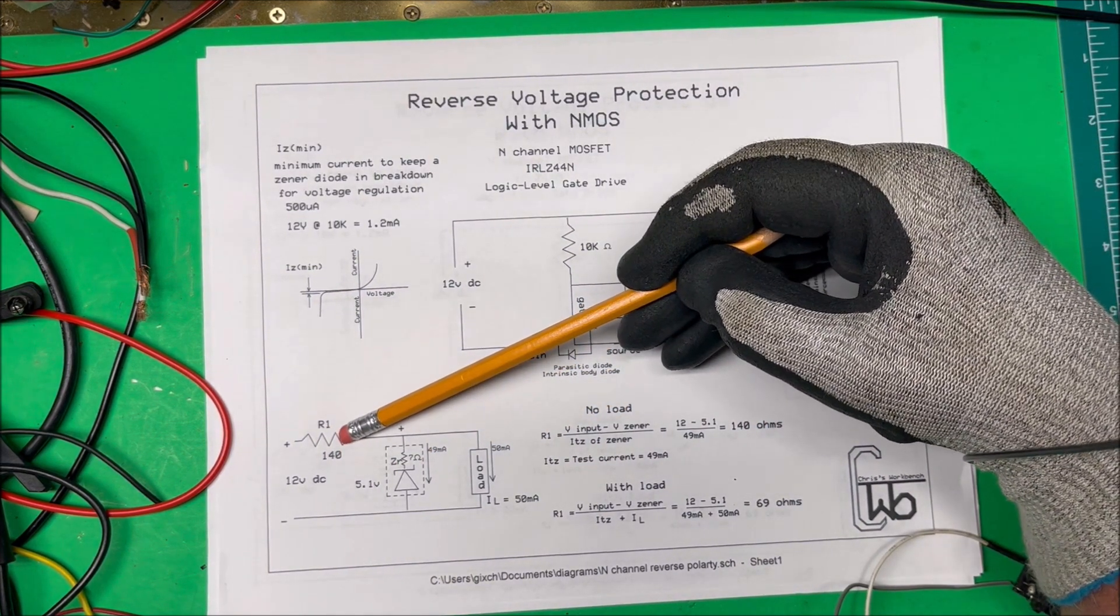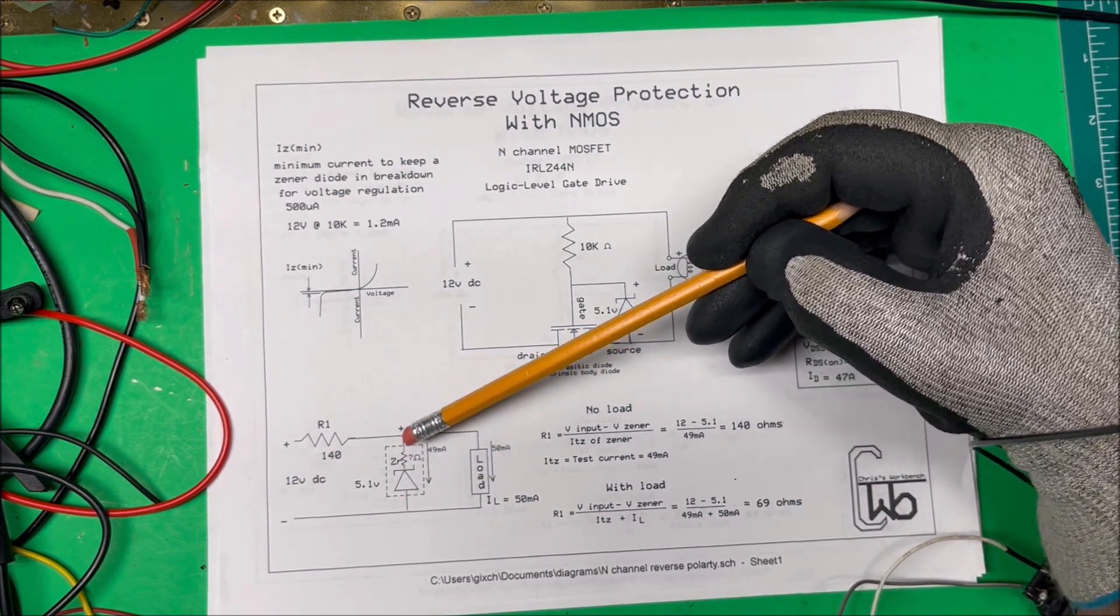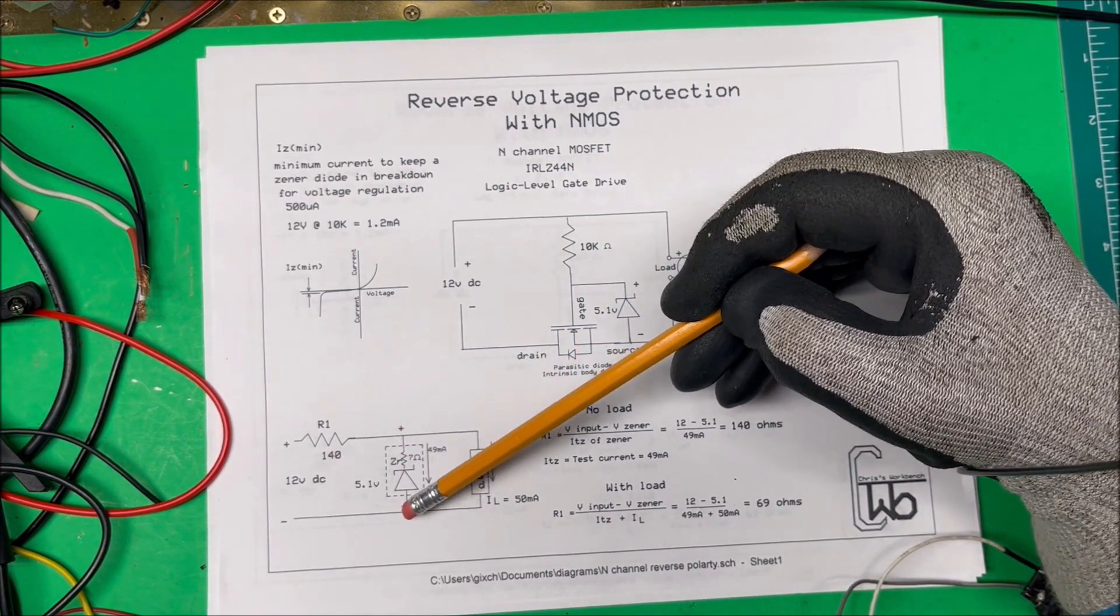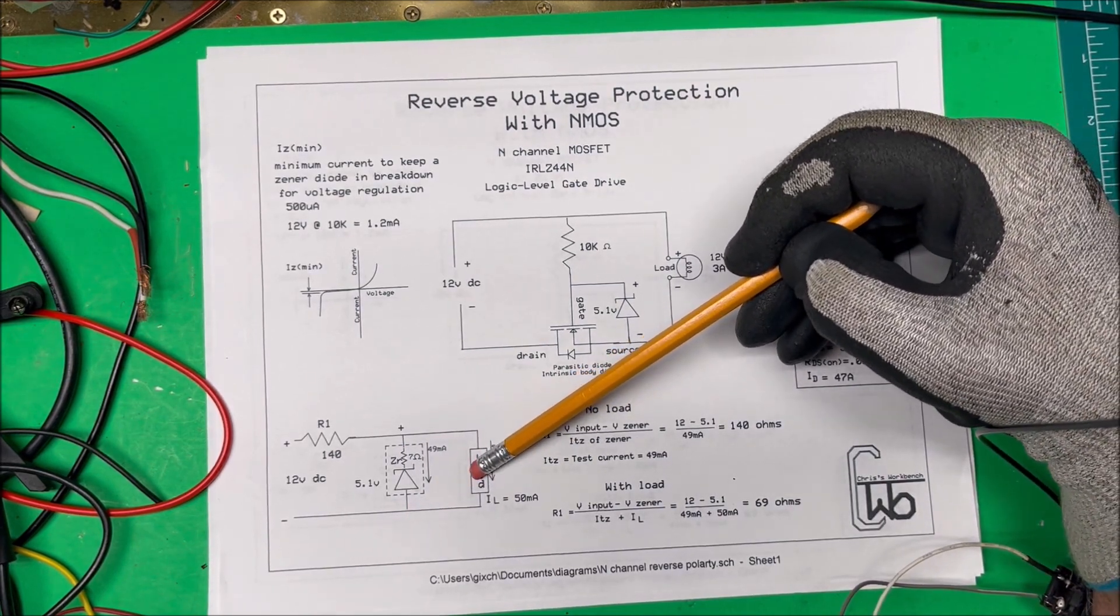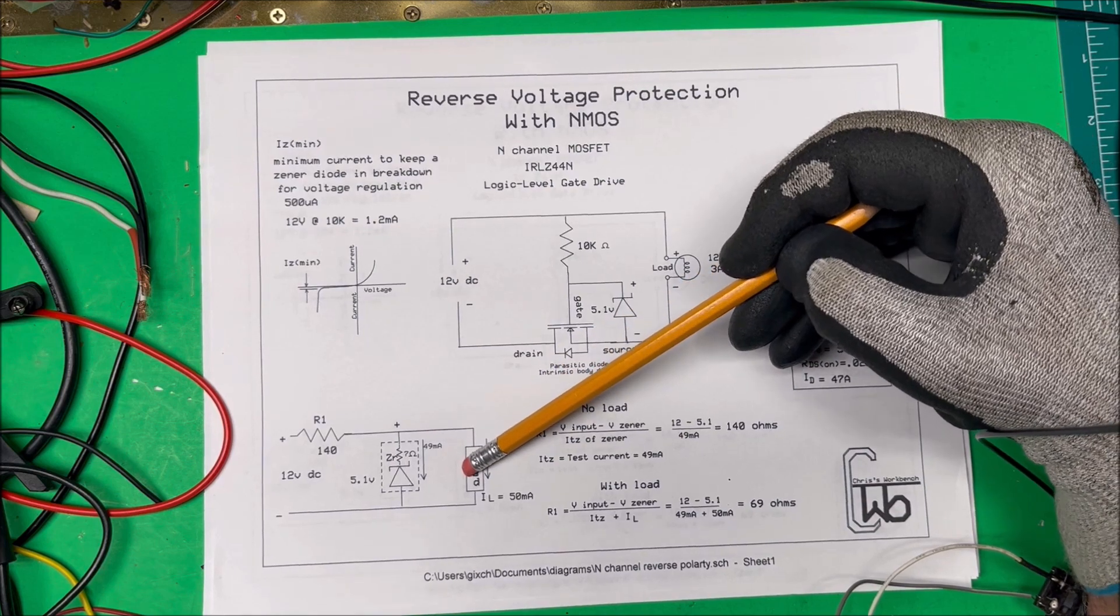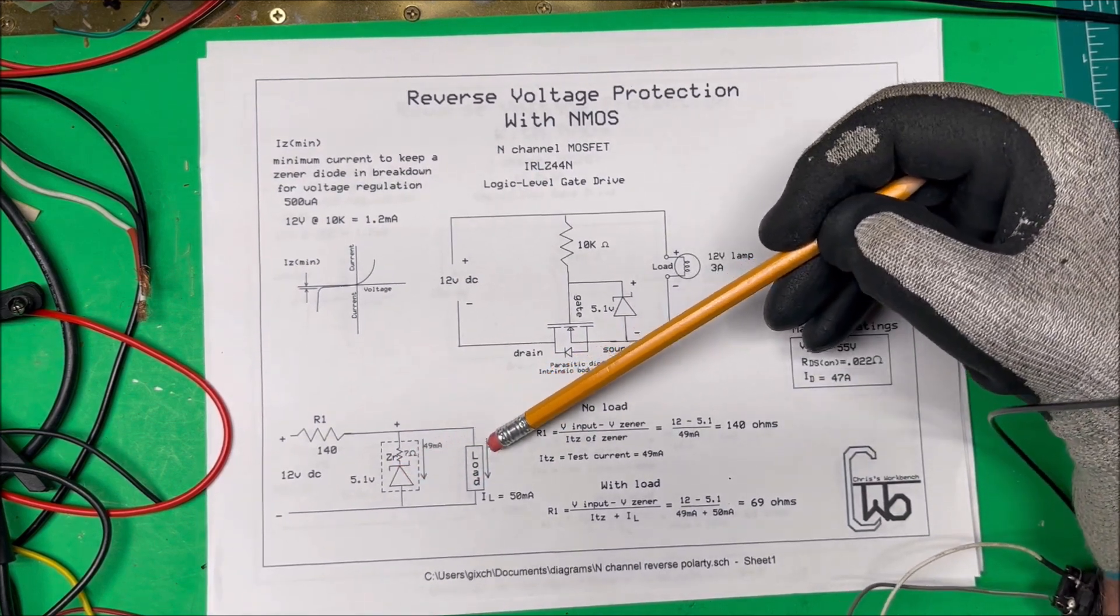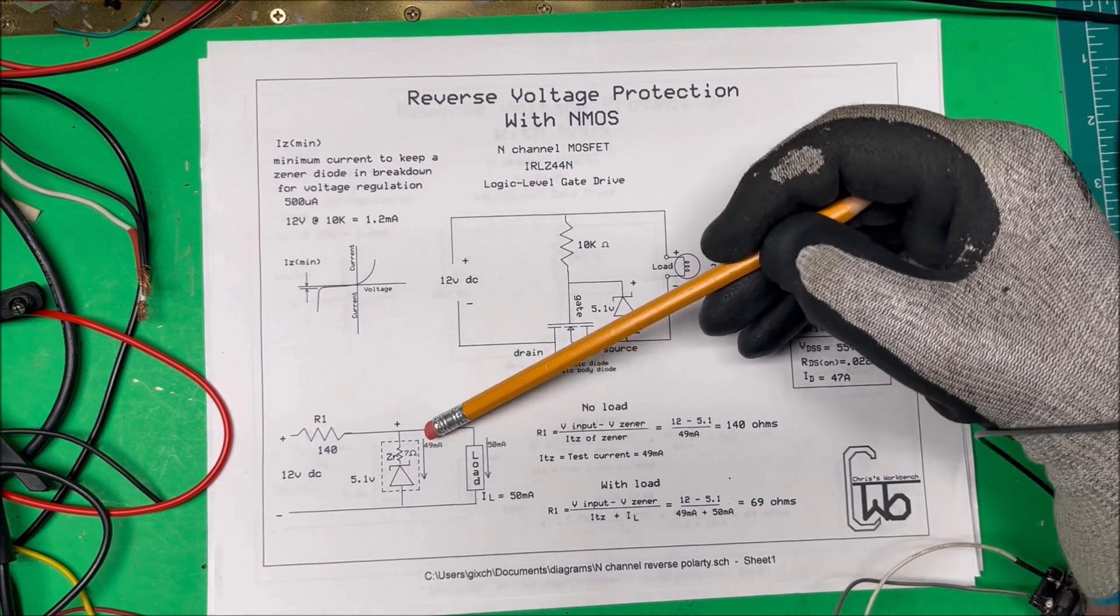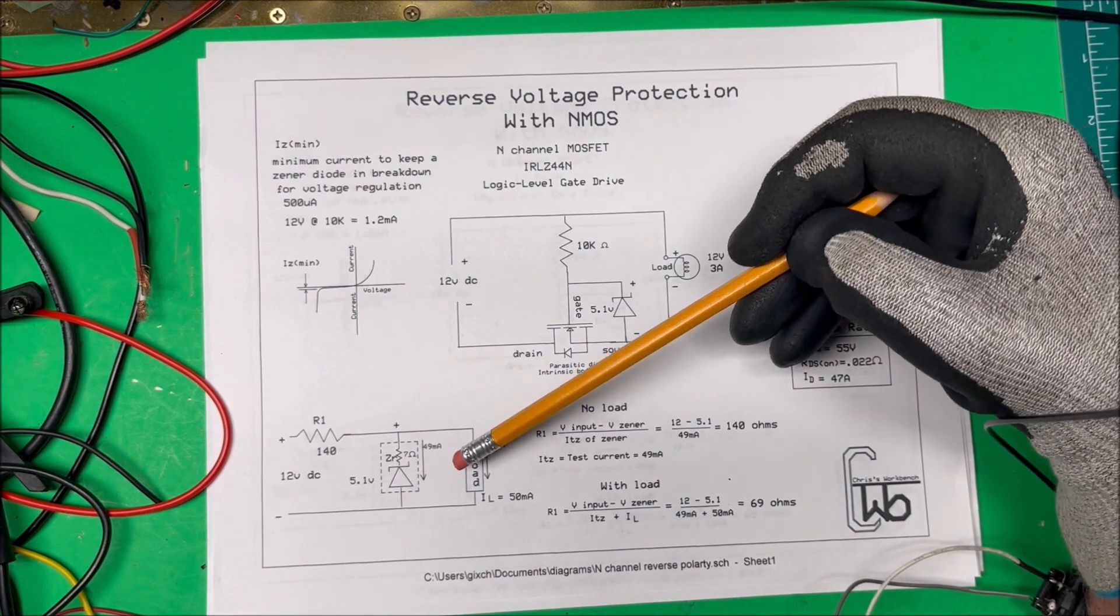So if we put 140 ohms in here we're going to get 49 milliamps through here. It's our test current, the Zener is going to be happy with that. Now we can increase the load over here, we can put you know 40 milliamps through here, we could probably put up to say 48 milliamps and it's still going to regulate. If we go over 50 milliamps now we're not going to have enough current left going through the diode to regulate anymore.